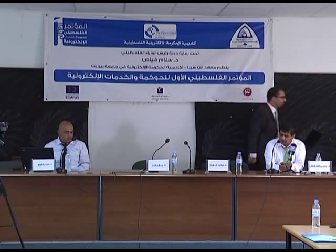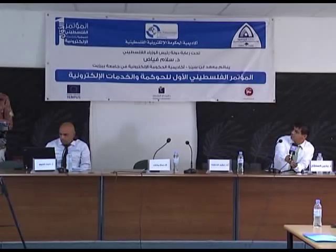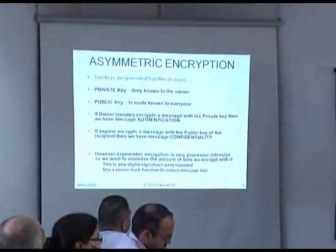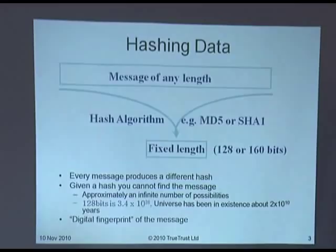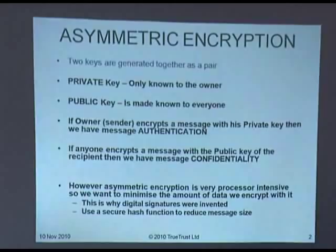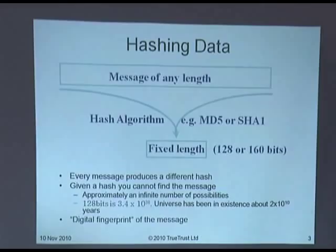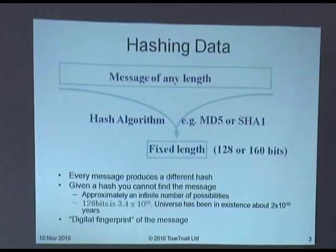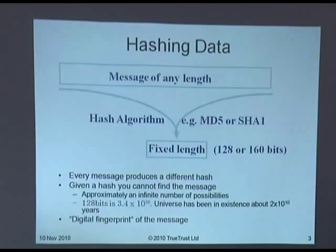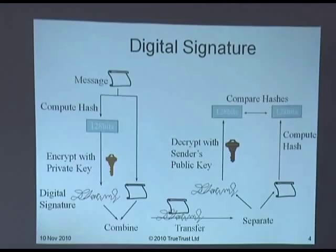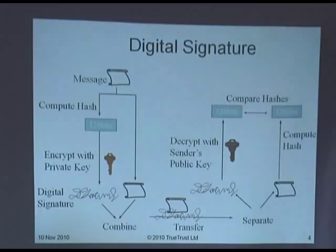I'm assuming people know what the technology is, so I won't spend much time here. Basically, you have two keys — the private key and the public key. When you sign things, you sign with your private key. You sign a hash of the data using a hashing algorithm — they say MD5 or SHA-1, but both are deprecated now, so you shouldn't use either. You take the message, sign it, and then compare the hashes.